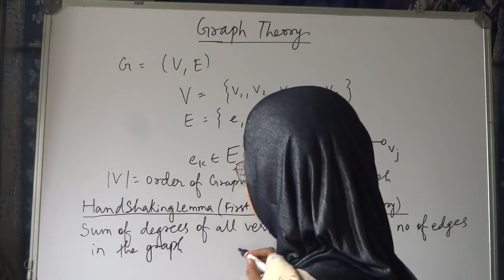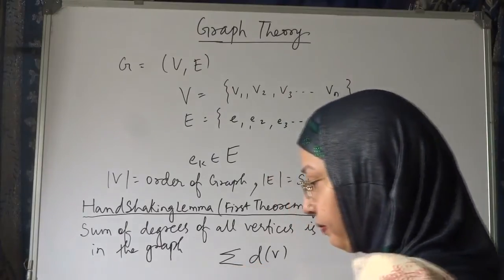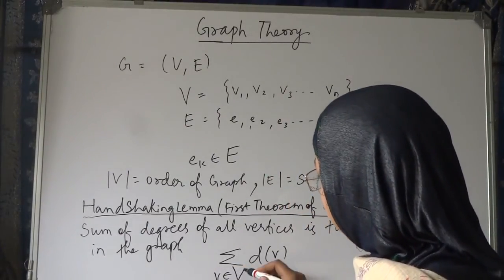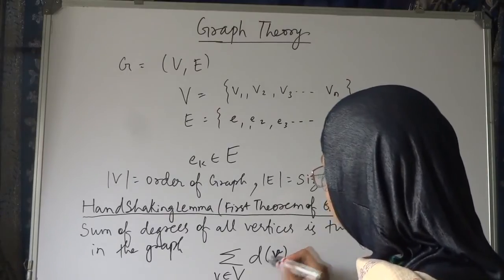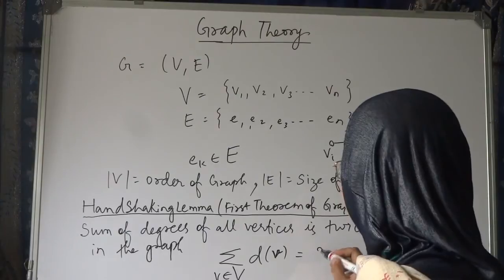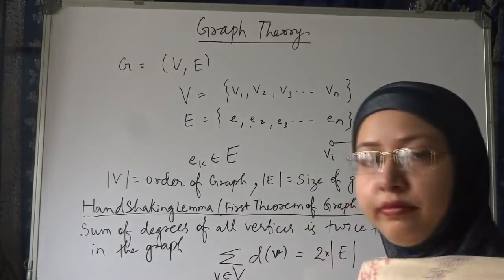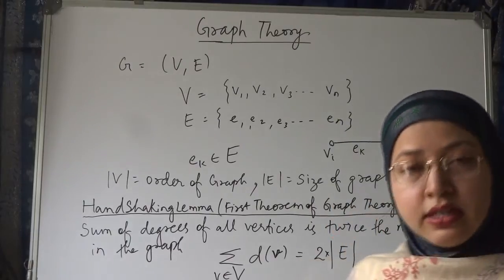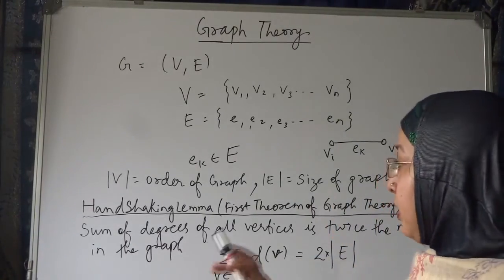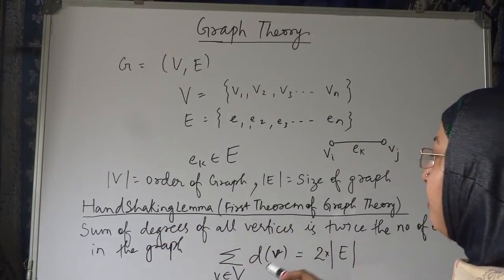Means sum of degree of vertices where v belongs to V. This is very important theorem. It says that sum of degrees of all vertices is twice the number of edges in the graph.